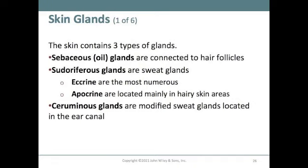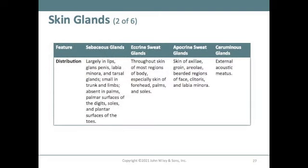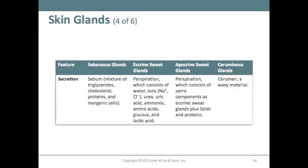There are three types of glands in the skin. Sebaceous glands produce oil and are frequently connected to hair follicles. Sudoriferous glands are the sweat glands, which include eccrine glands — the most common — and apocrine glands, located mainly in hairy skin areas. Ceruminous glands are modified sweat glands located in the ear canal that produce earwax. Table 5.3 on page 161 has more detail.